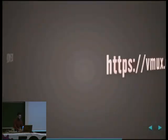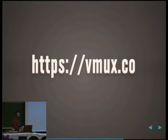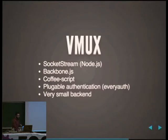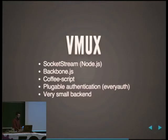You can find the URL and go try it now. The code is also available — there's a link at the bottom of the page with a GitHub URL if you want to check it out. The stack Vemux is built on is SocketStream, which is a framework that allows publish/subscribe message passing. The front and back end is really small because the only thing it does is message passing between WebSocket clients. Everything else is built on the client side on top of Backbone. It's written in CoffeeScript. For authentication I chose Twitter, but it uses Everyauth, which is a Node project with pluggable authentication so you can use anything you want.